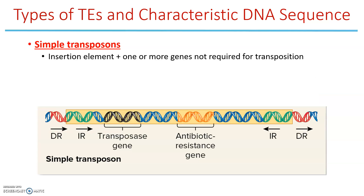Then we have simple transposons, which are like insertion elements but can also carry additional genes. So a simple transposon has a direct repeat, inverted repeats, transposase, and another gene — both insertion elements and simple transposons are capable of simple transposition.